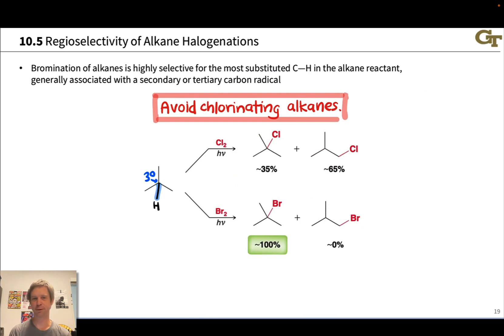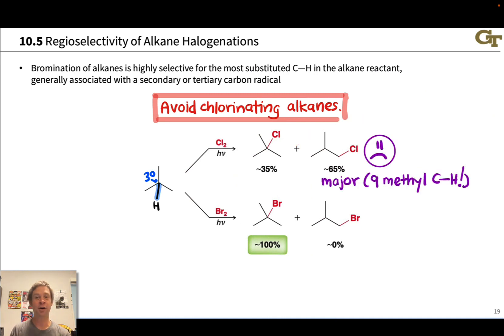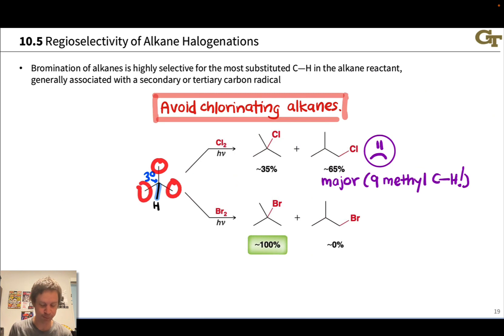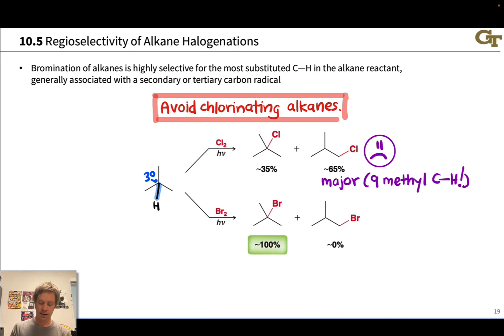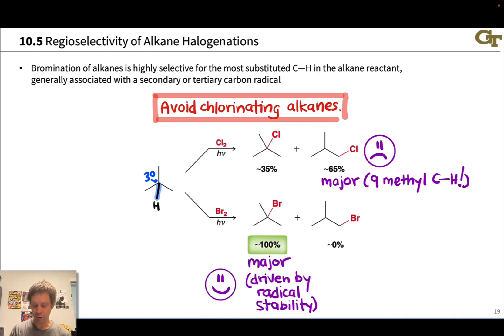Here's another example that makes the difference between chlorination and bromination even more stark. When we take tert-butane and hit it with Cl2, the major product is actually the primary alkyl chloride, because there are nine methyl C-H's in this compound. Statistics and entropy argue we're going to chlorinate at the more abundant methyl C-H position. However, if we use bromine, we see completely different outcome — no bromination at the methyl carbon and entirely bromination at the tertiary position.